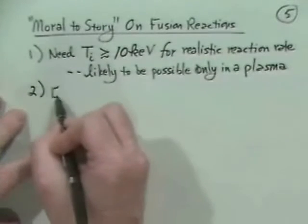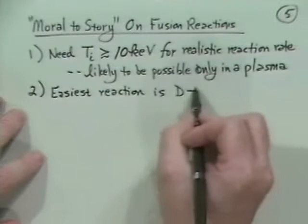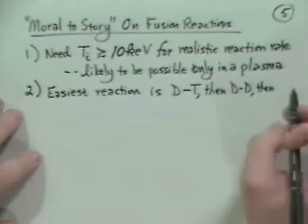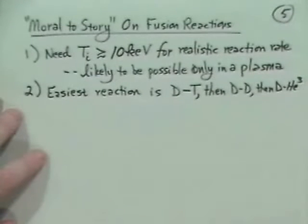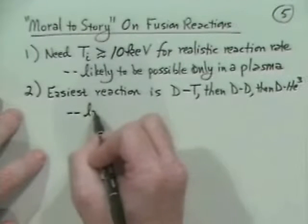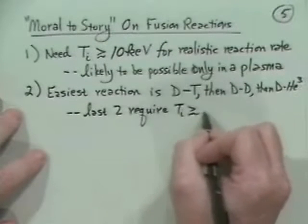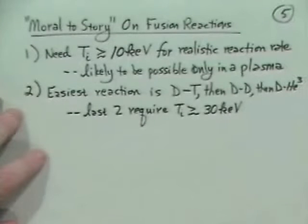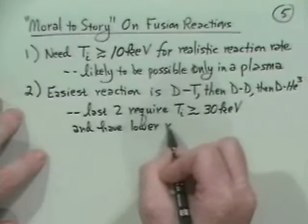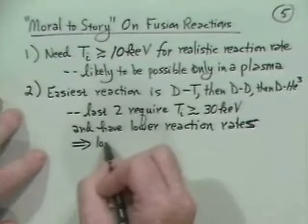The second comment: the easiest reaction is DT, then DD, and not too far behind, D-helium-3. The latter two require not just 10 kilovolts, but an ion temperature greater than about 30 kilo electron volts. They also have lower reaction rates, which means they lead to lower fusion power densities unless you can get higher plasma densities to bring the N² sigma v reaction rate back up.